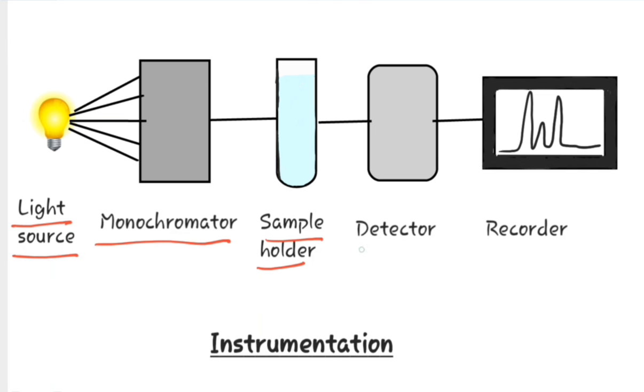The light passed from the sample holder is then sent to detector where it gets detected, amplified, and then sent to the recorder. Recorder displays electric signal in the form of a graph. Now let us study about each component of the instrument in detail.